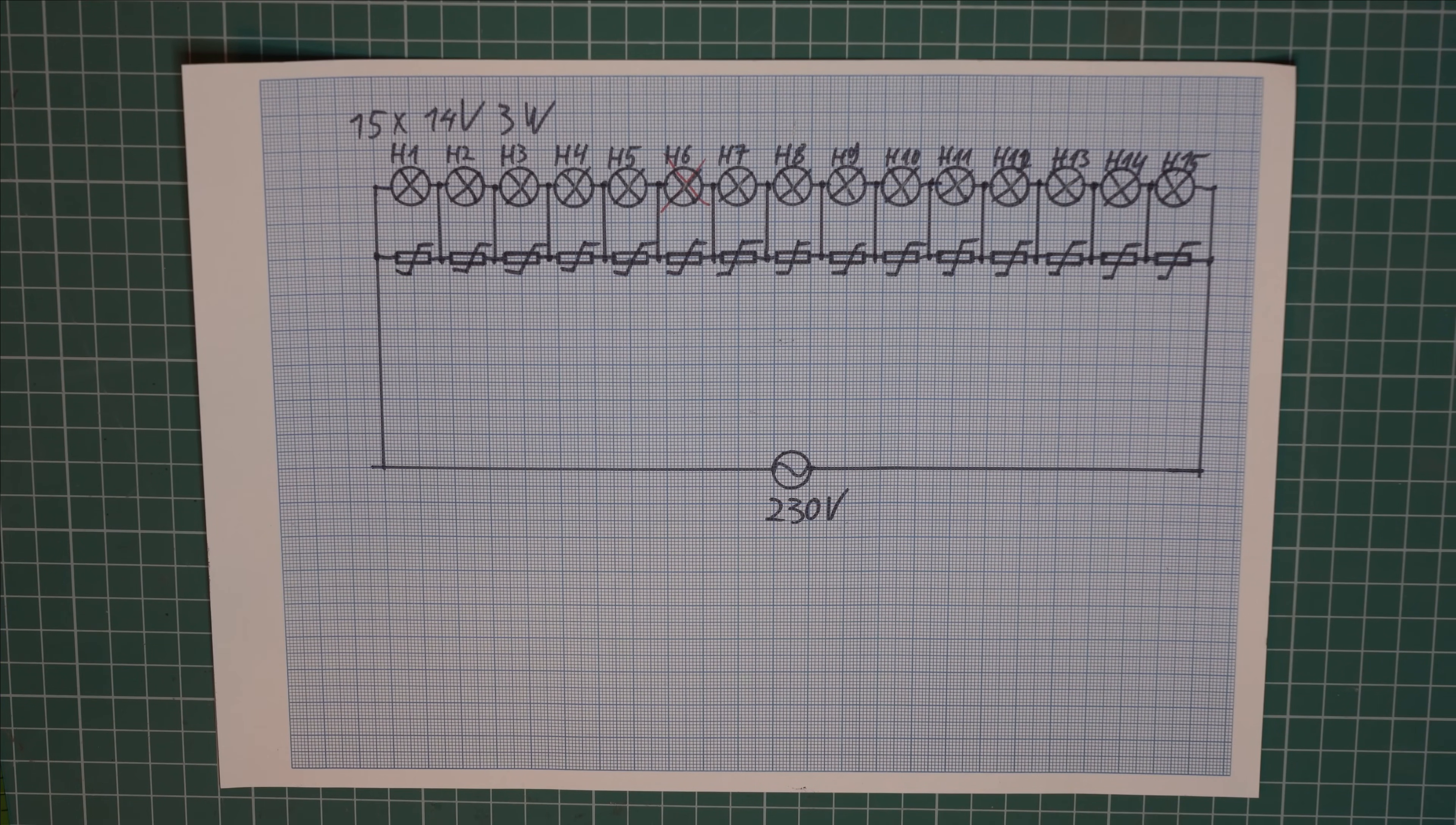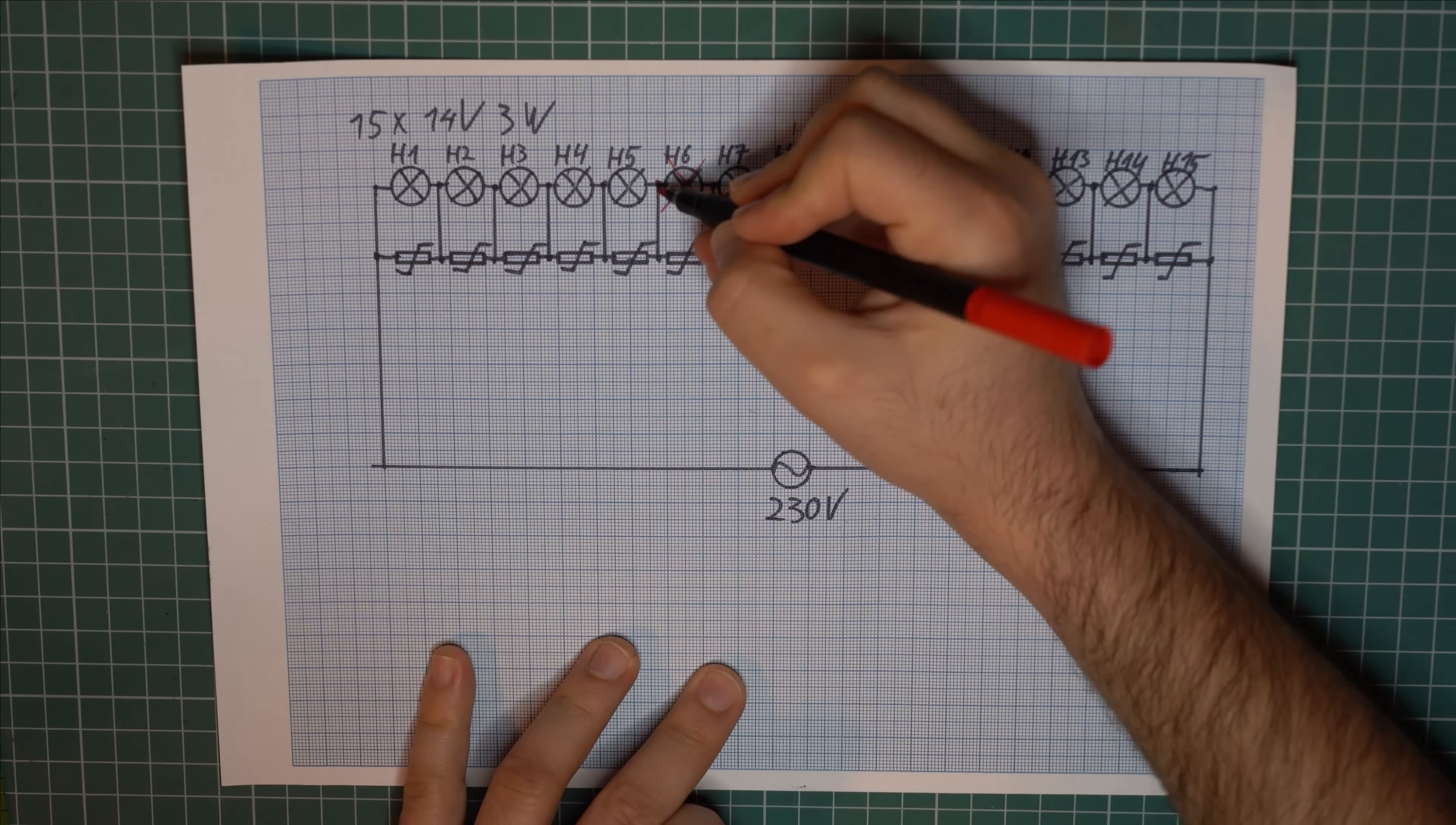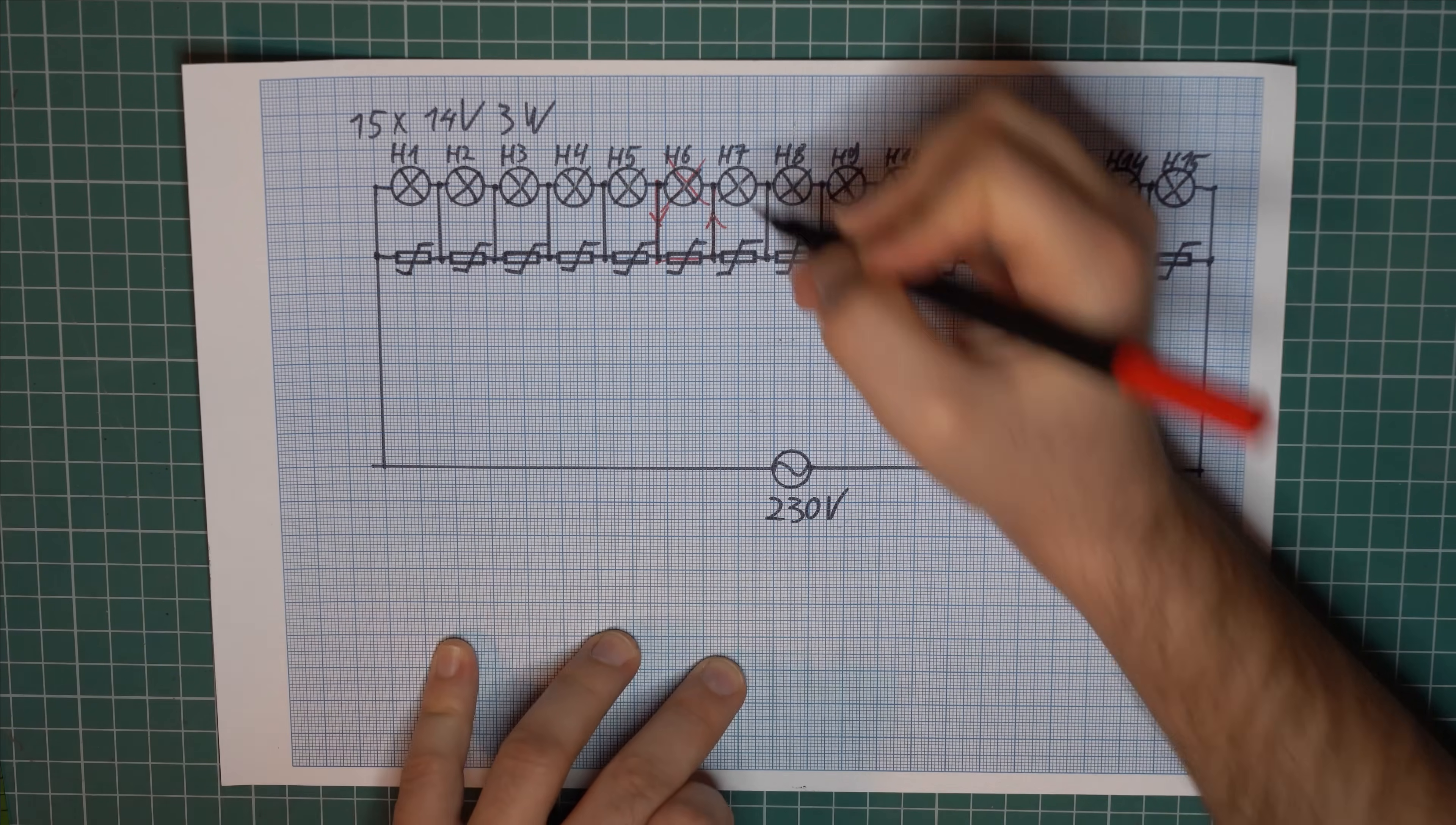Now this schematic certainly solves the issue of having one light out because the broken light can simply be bypassed by the varistor. And the current will flow through the varistor instead of flowing through the lamp. However this introduces some new problems.